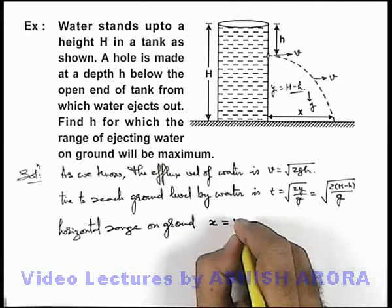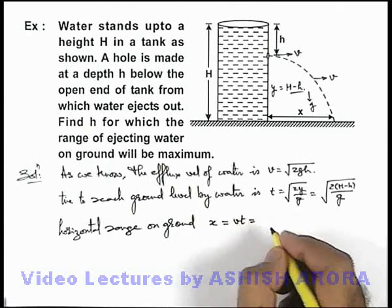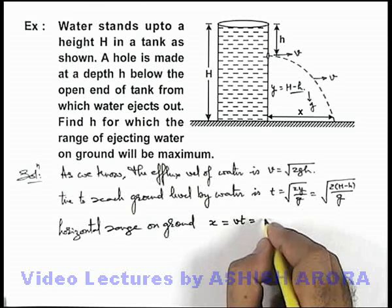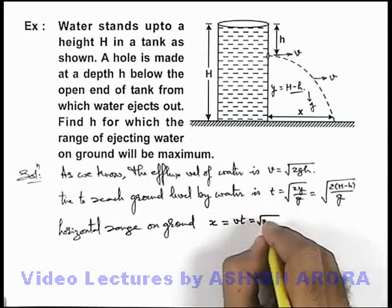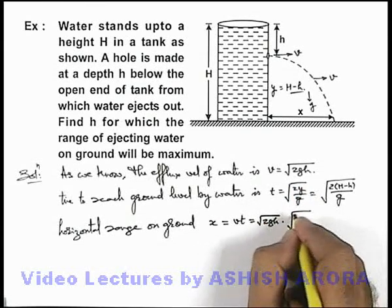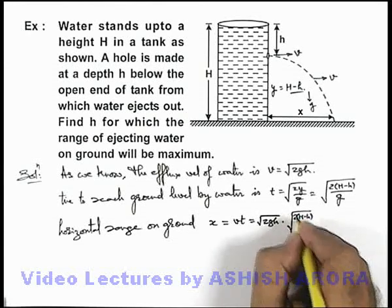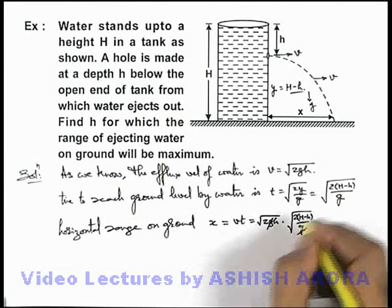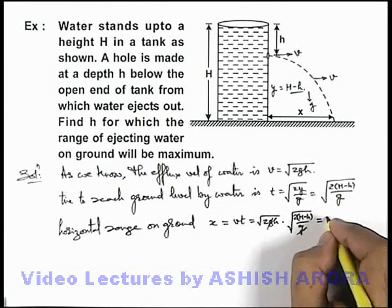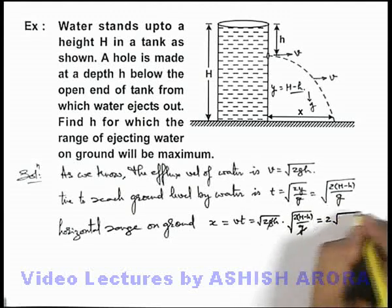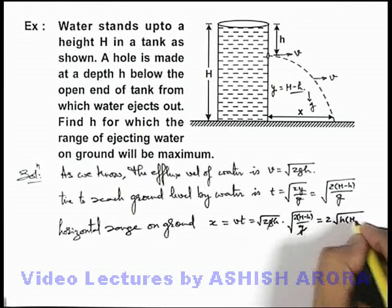This x can be written as vt. This can be directly written as root 2gh multiplied by root of twice of H minus small h by g. Here g gets cancelled out. The result will be twice of root small h into H minus small h.